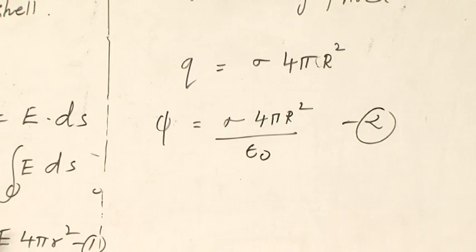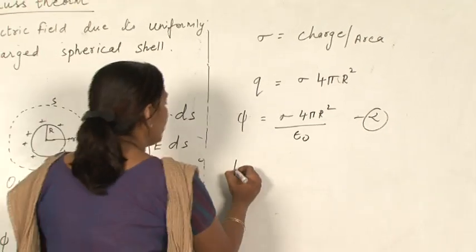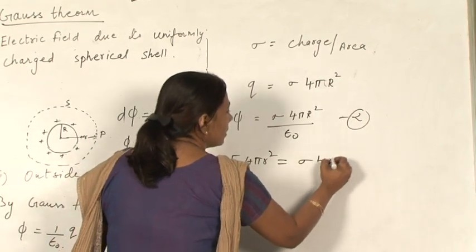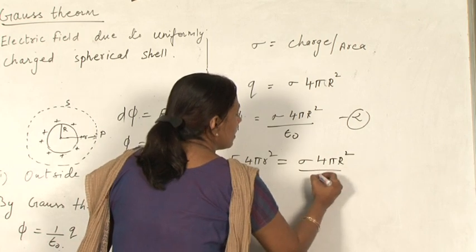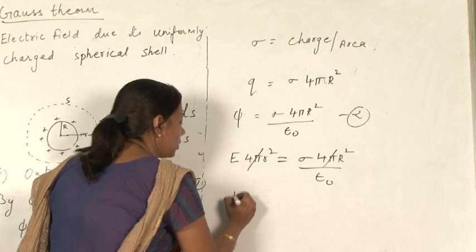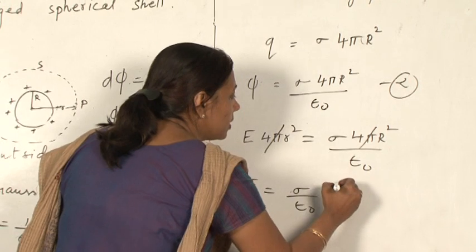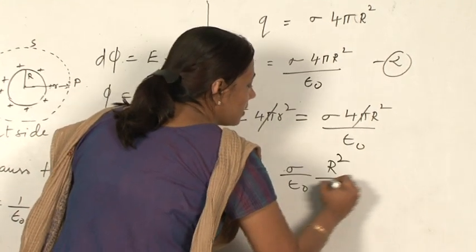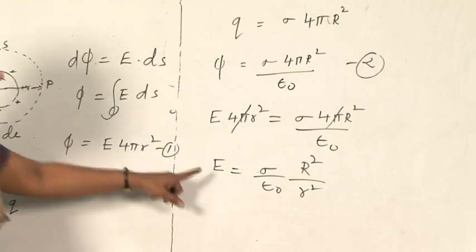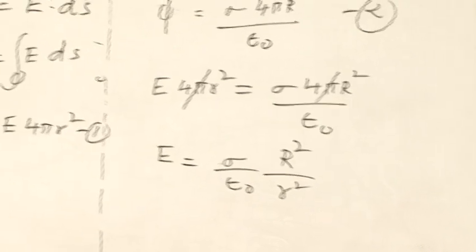Equations 1 and 2 represent the same flux, so we equate them: E·4πr² = σ·4πR²/ε₀. The 4π cancels, giving E = (σ/ε₀)·(R²/r²). This is the electric field at a point outside the charged spherical shell.